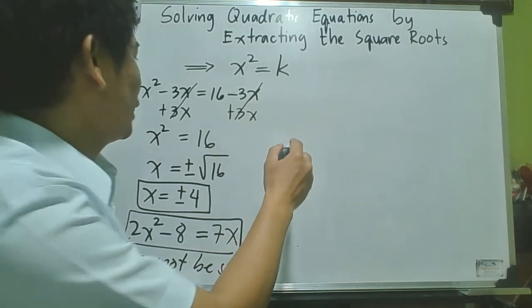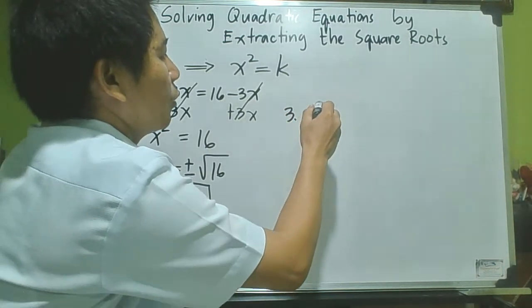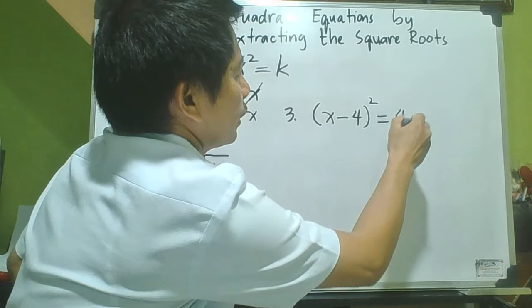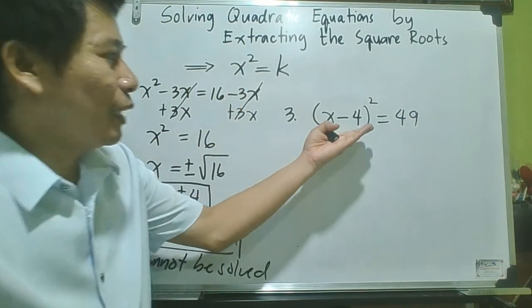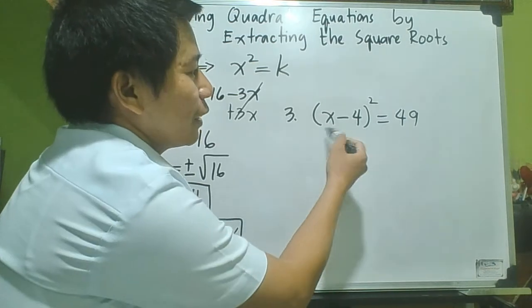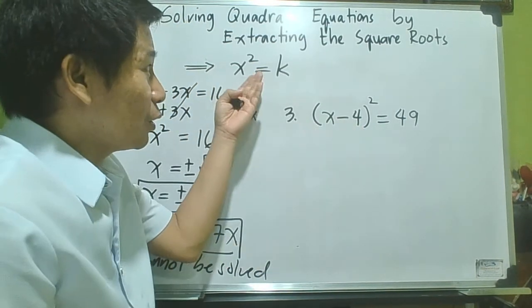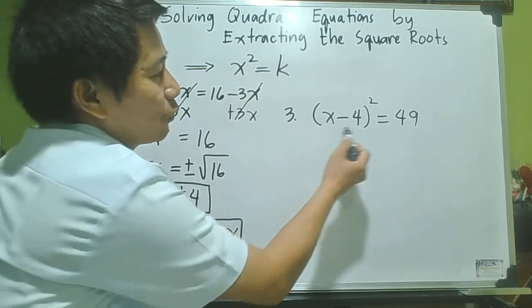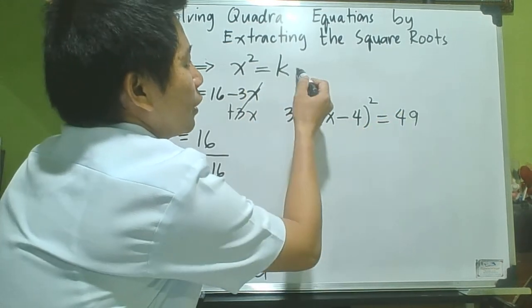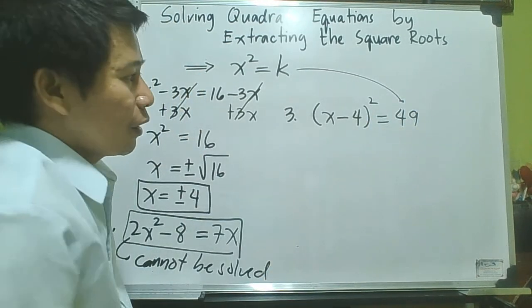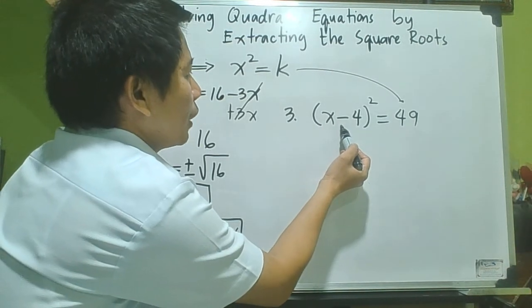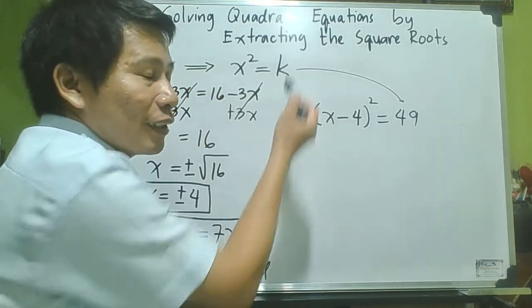How about this case? Suppose we have the quantity x minus 4, squared, is equal to 49. Observe that the left side is the square of a binomial. If we expand it, it's not in the form x squared equals k — but as written, this is already in the form x squared equals k, where our x squared is the quantity x minus 4 squared, and k is 49. So we can use extracting square roots.